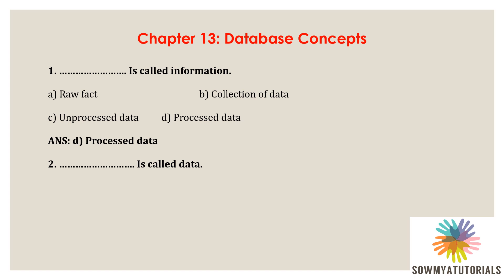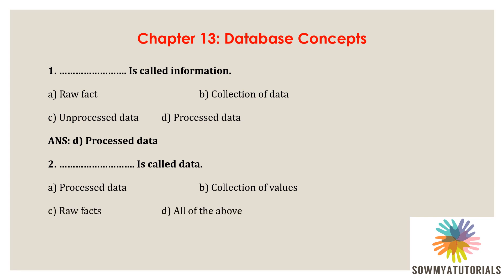Next question: dash is called data. Options are A) processed data, B) collection of values, C) raw facts, D) all of the above. The correct answer is C — raw facts. Data is a collection of raw facts, whether it is text, numbers, audio files, video files, or anything. All these are raw facts, which we call data.